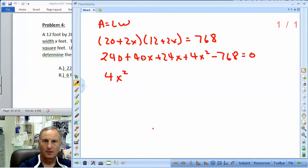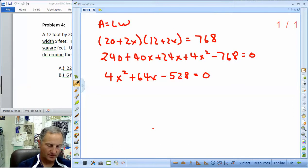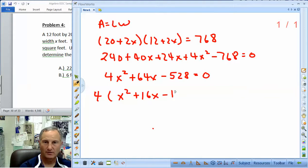So let's combine like terms. Let's get it in standard form. We've got 4x squared plus 64x here. And then 240 minus the 768 is going to be minus 528. Does 4 go into 528? I believe it does. 528 divided by 4 is 132. So I'm going to factor a 4 out of this just to make it smaller. But I'm doing it so that we have smaller numbers to work with.